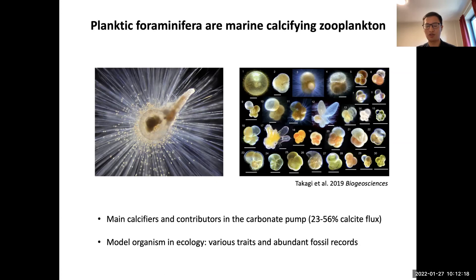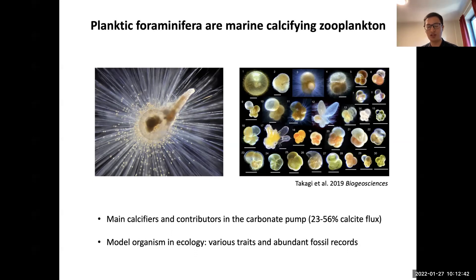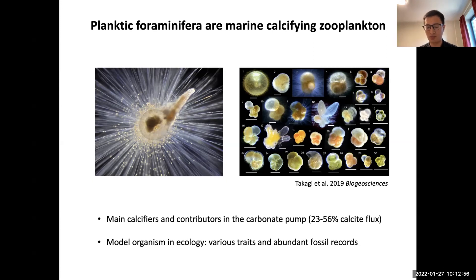For other species, they don't all have the same shape. Some species are just transparent, meaning they don't have symbionts. Some species don't have spines and they also have different sizes and different morphology. FoRan is also interesting because they have accumulated a lot of tests in marine sediment, giving them very abundant fossil records. So we can not only study them in the modern ocean, but also study paleoecology.